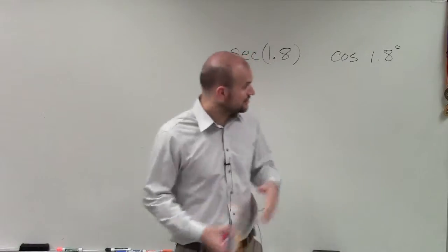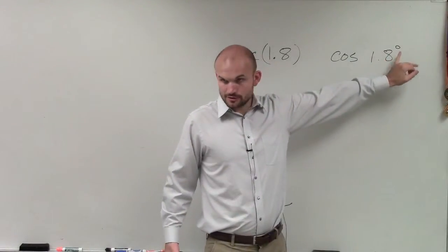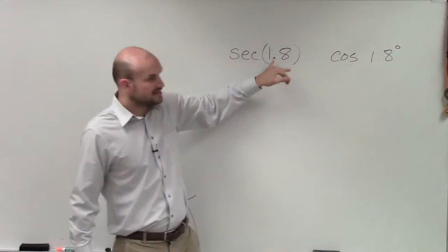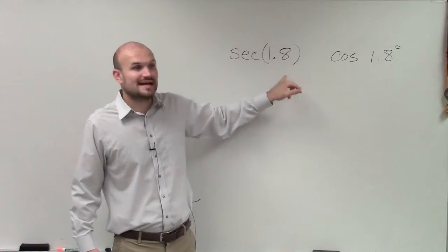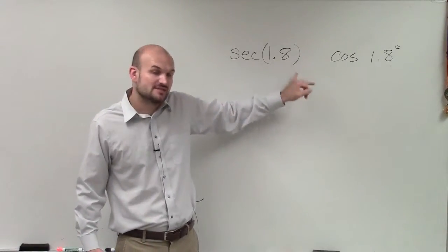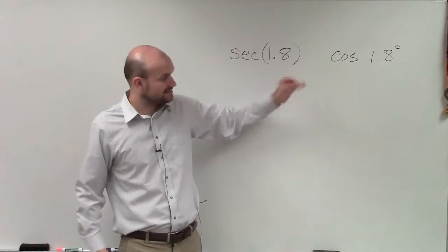If we're talking about an angle in degrees, it has a nice little degree symbol. This is a whole number, right? So this is in radians. I know it's not in terms of pi, but it's in radians. That's 1.8 radians.